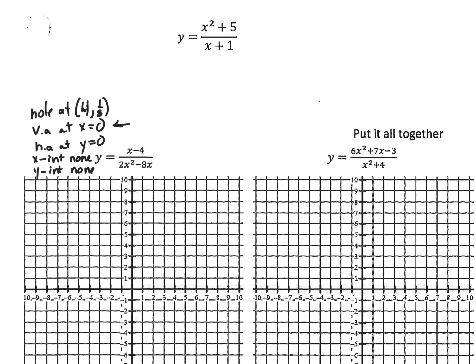The other thing we figured out with this one was we had no togetherness. How do I know that? Because when I did this, I had x minus 4 to the first power, and 2x and x minus 4, also to the first. This one went away, so we were left with 1 over 2x to the first power. That multiplicity is how we tell togetherness.